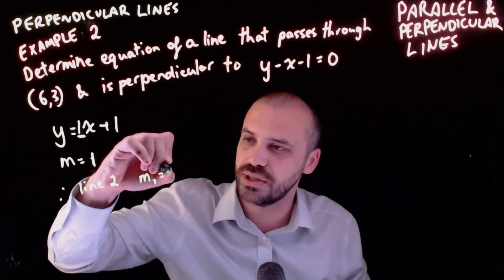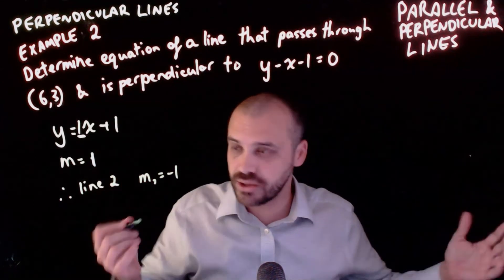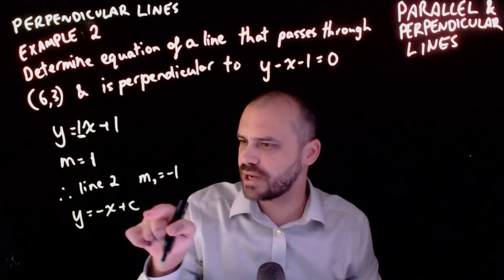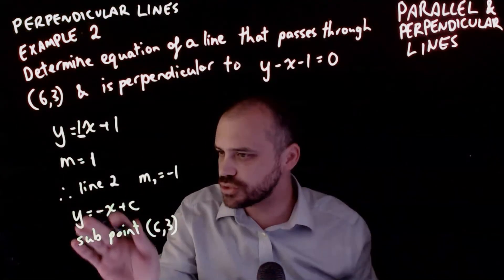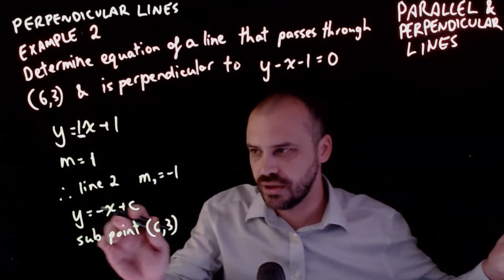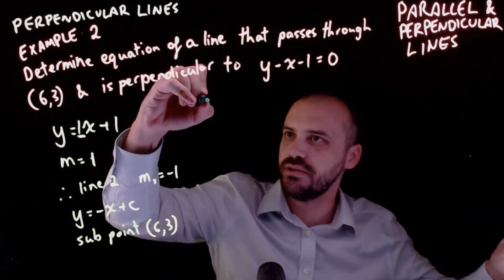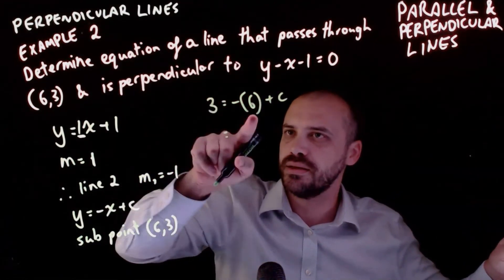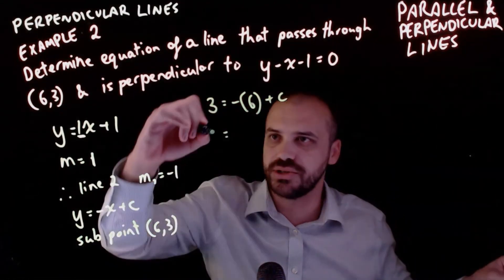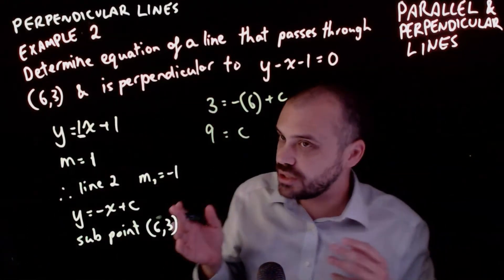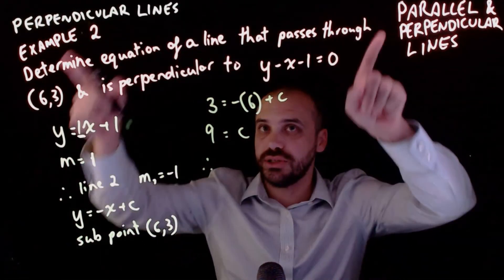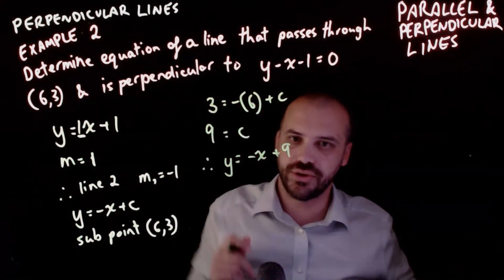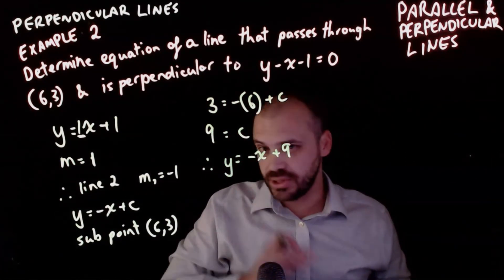So the equation of line 2 is y equals negative x plus c. It passes through the point (6, 3), so substituting 3 for y and 6 for x: 3 equals negative 6 plus c. Adding 6 to both sides gives c equals 9. Therefore the equation of the line that is perpendicular to the original line is y equals negative x plus 9. That covers parallel and perpendicular lines.